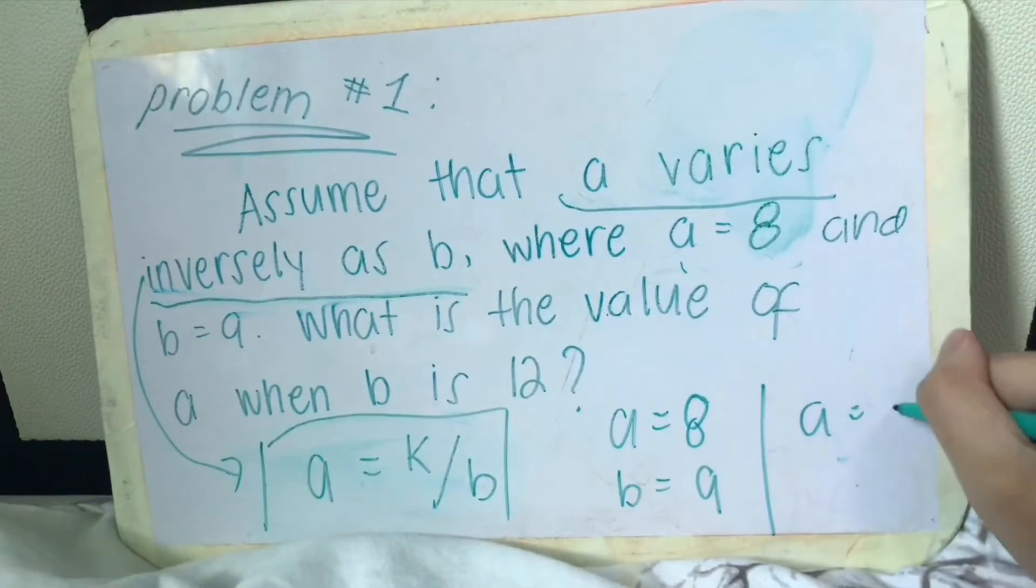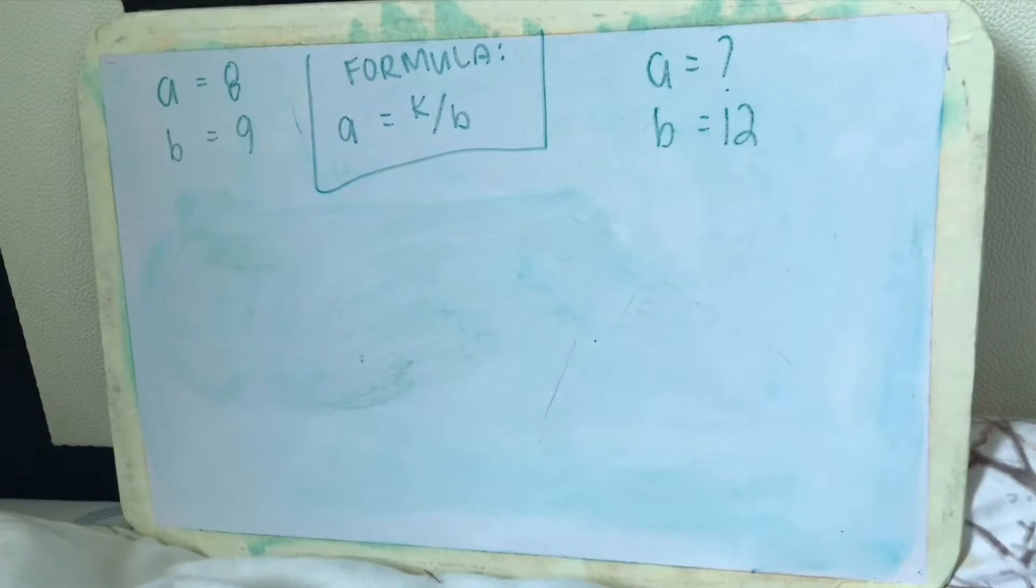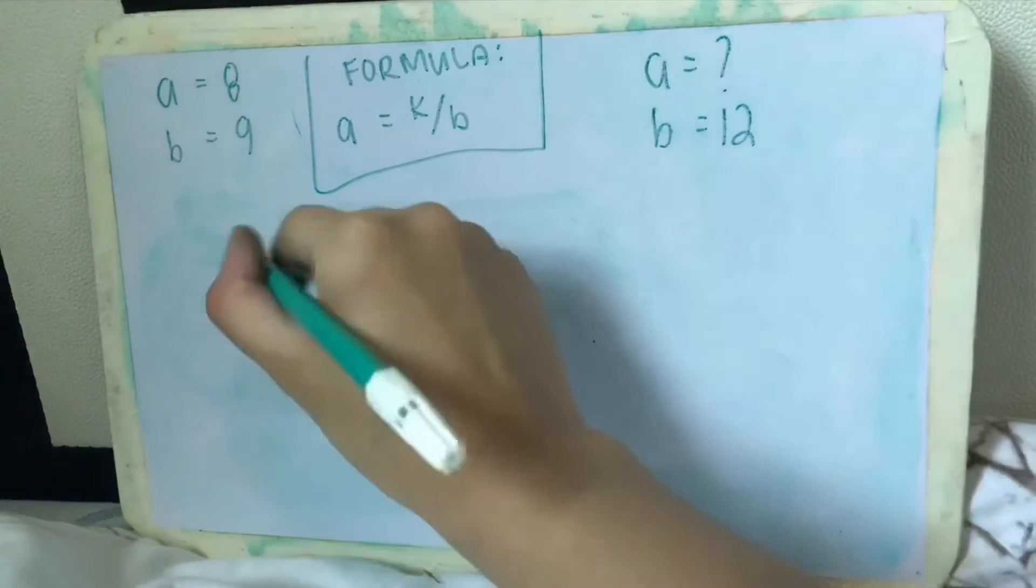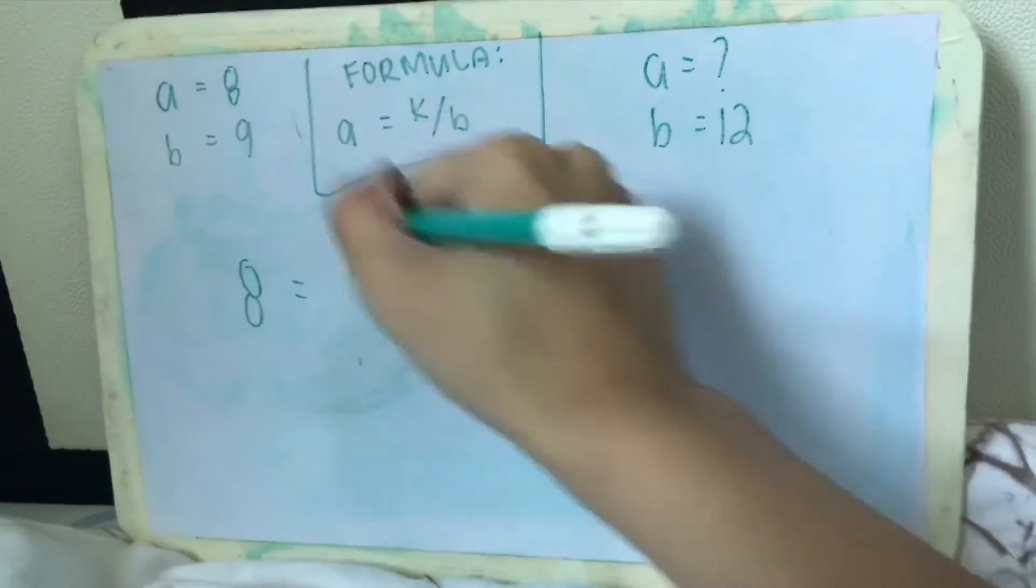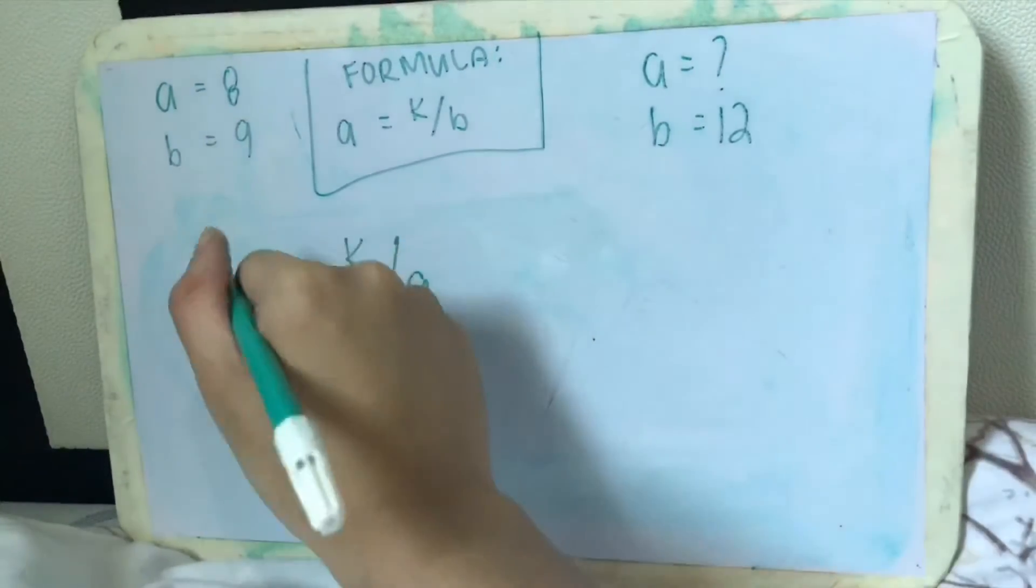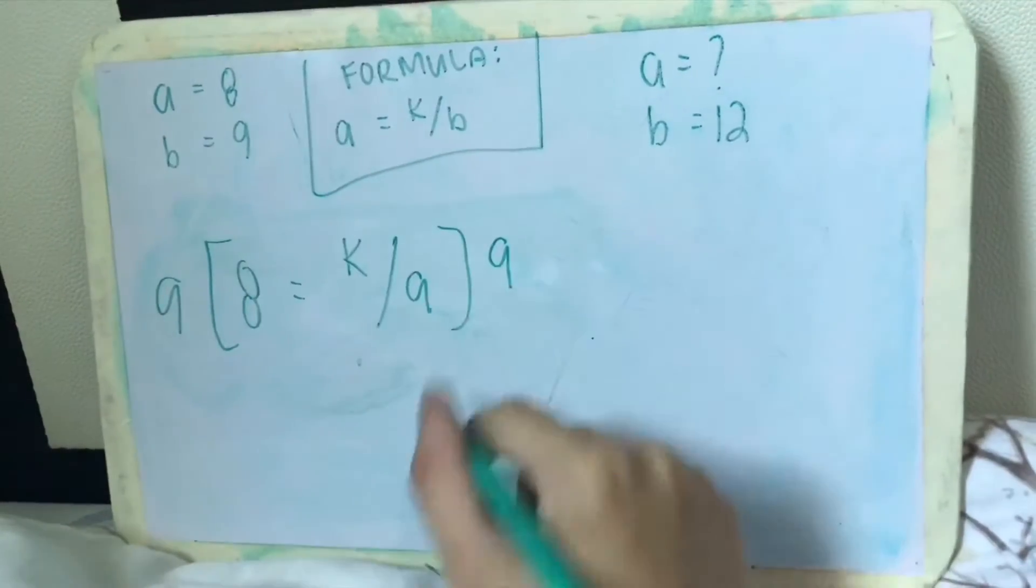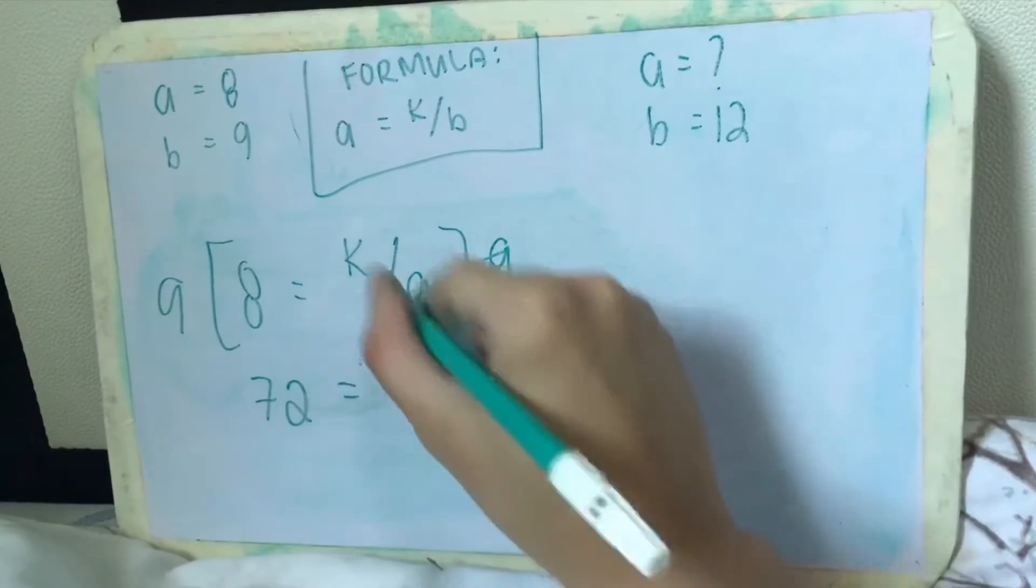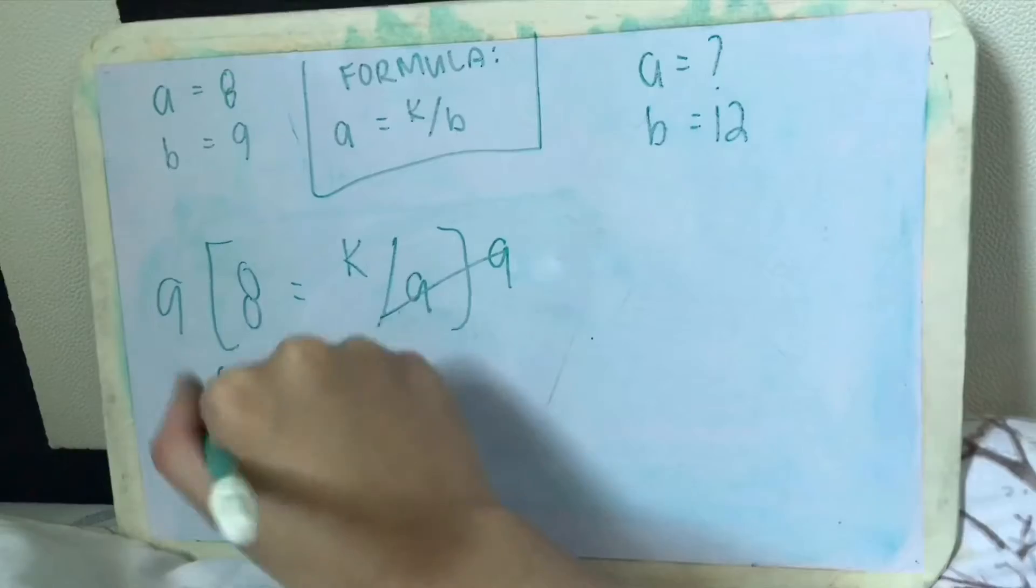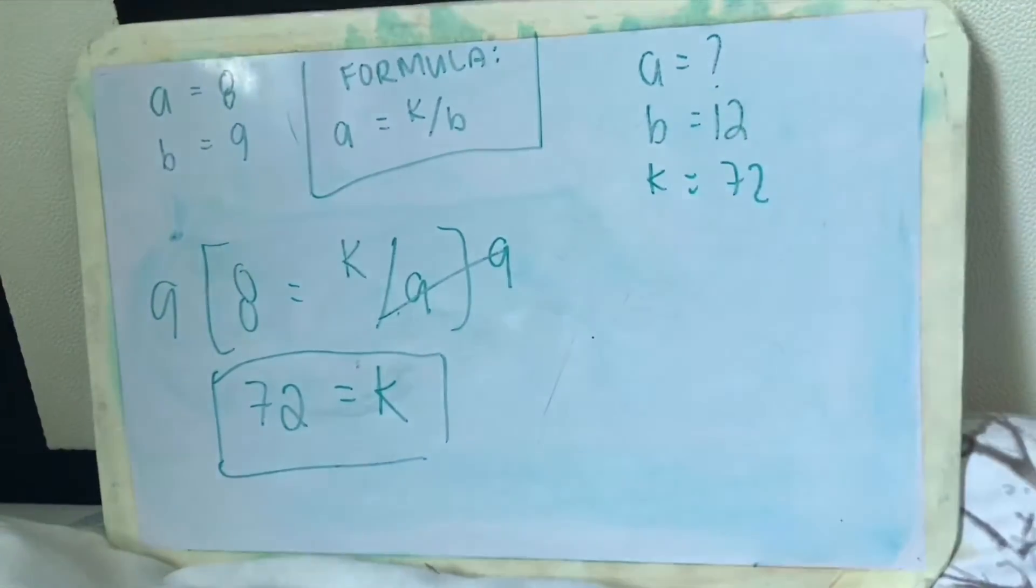First we need to find the constant. To find the constant, let's substitute the values 8 and 9. So a is 8 equals k over b is 9, so let's put 9 here. Let's solve for this. To solve for this, let's multiply both sides by 9, so 9 here will be canceled. 9 times 8 is 72 equals k. So this is our constant, k equals 72.